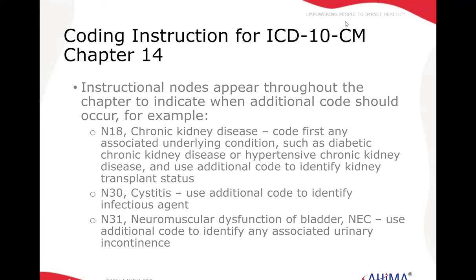N30 is cystitis — that's a bladder infection. And with all infections, we'll use another code to identify the infectious agent. In this case, we need to code it as a second code or an additional code.